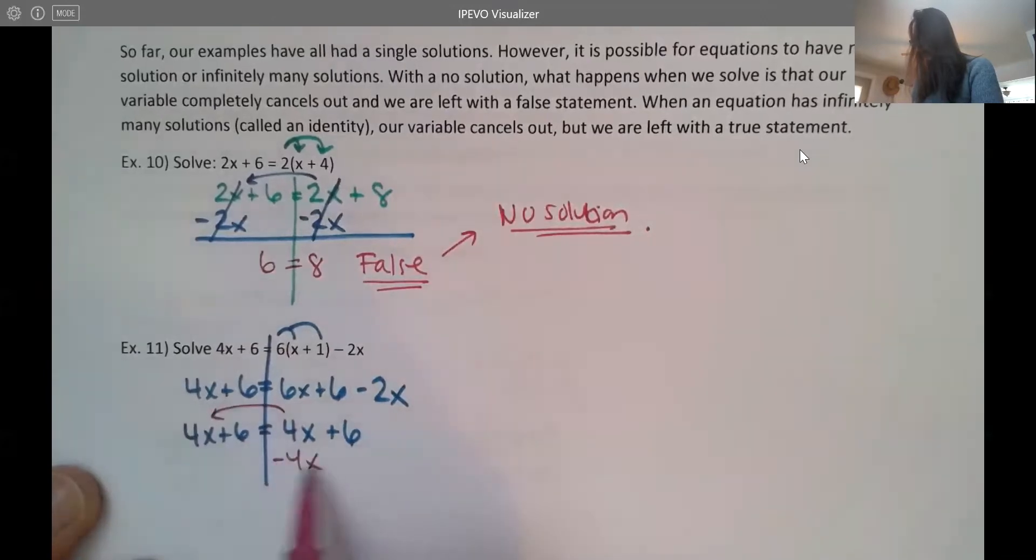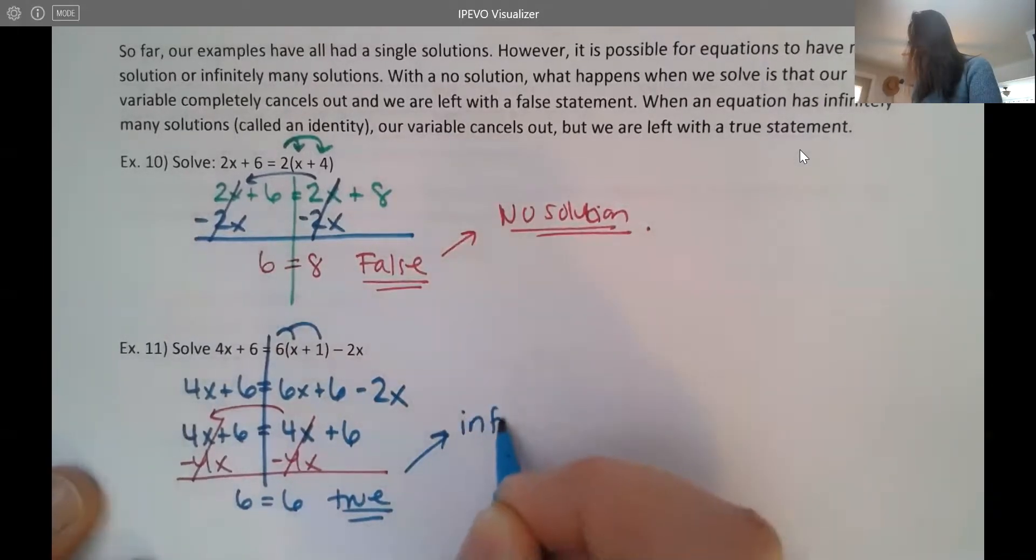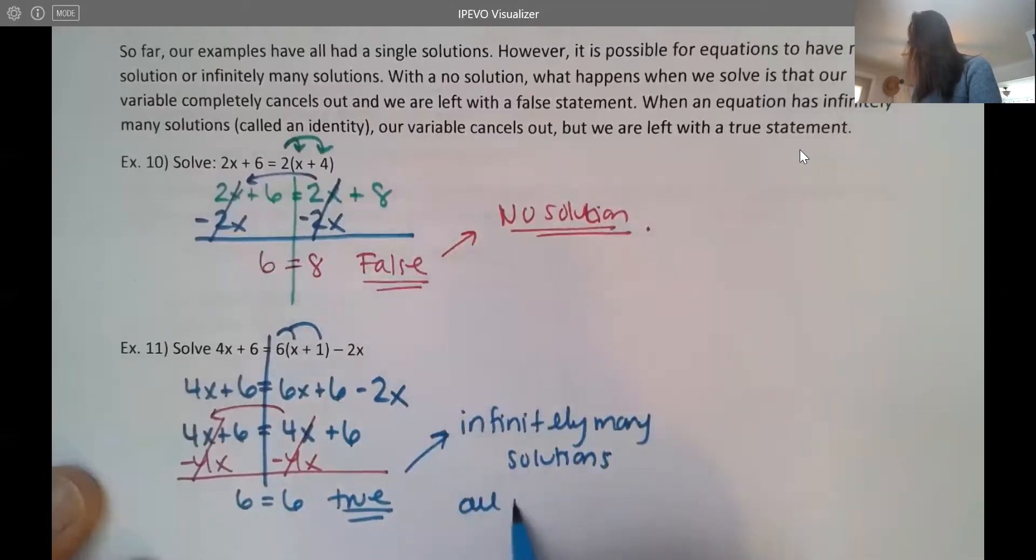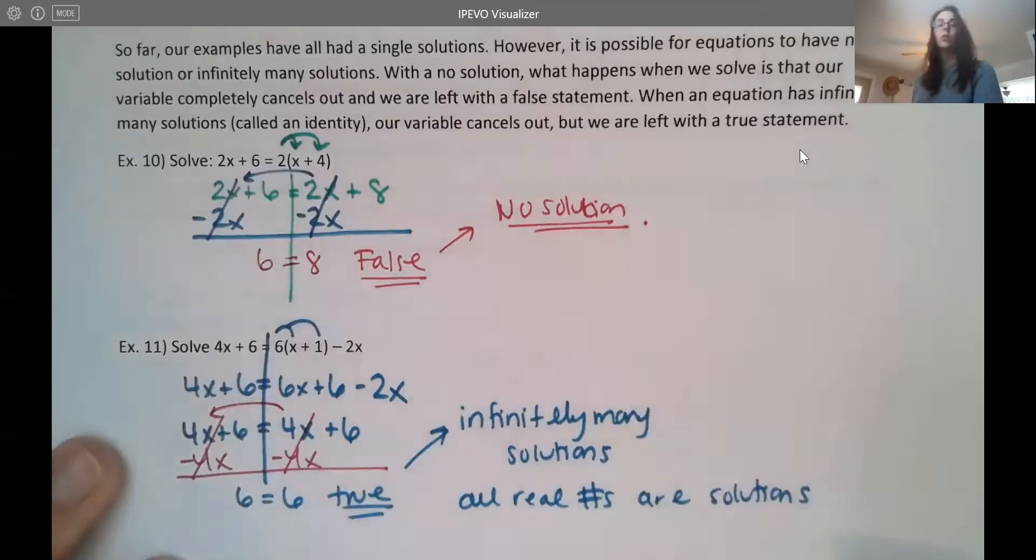So now I try to get my x's together. And again, when I go to bring my x's over and I subtract 4x, they cancel on both sides. So I'm left with 6 equals 6. Now this here is different. This is a true statement. So what happens here is we actually have infinitely many solutions. So basically all real numbers are solutions here.